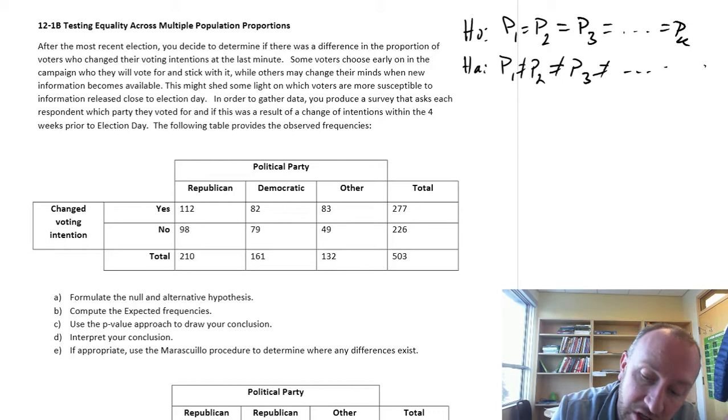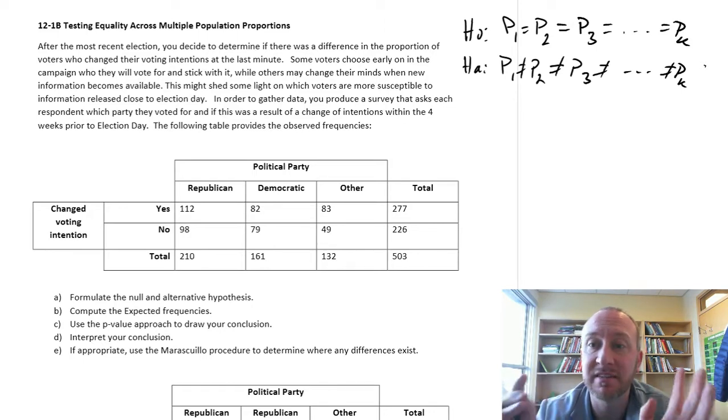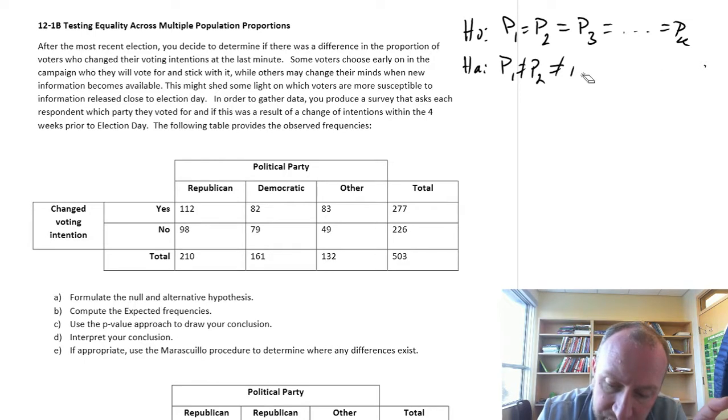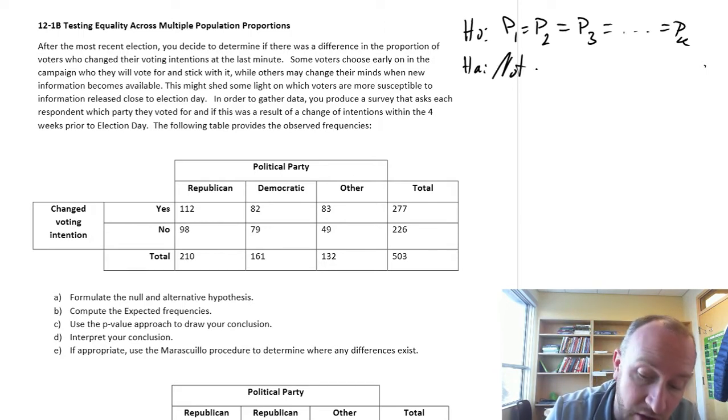A really common mistake that I often see students making is writing that they're all simultaneously not equal. That's a possible outcome for sure, but it's not necessarily what we're testing for. All we're testing for here is that in the null they're either all equal or in the alternative they're not all equal.